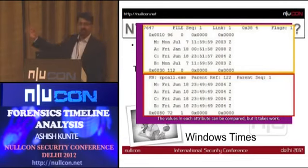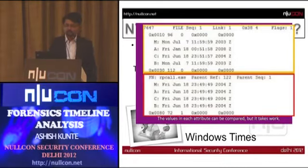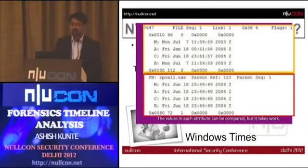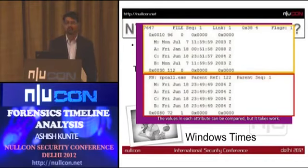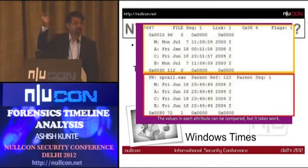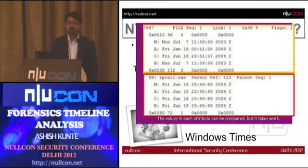In the master file table, there are two standard attributes: standard information and file name. For a single file, the MACB attributes — created, last modified, MFT entry modified, and last accessed — are stored in both attributes, giving eight timestamps total. Standard information may be modified by anti-forensic tools, but you cannot modify the file name attribute because it's used by the Windows OS API itself. And it would be nearly impossible to do so within a 100-nanosecond window. There are no known tools that can modify the standard file name attribute.